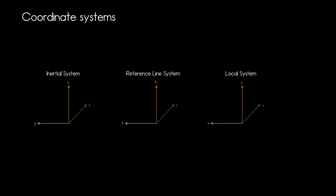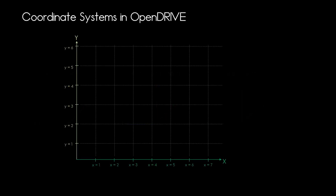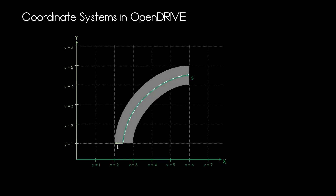While this is still quite abstract, let's see how it is all interconnected. The inertial system is the basis and everything is defined within this system. The start point of each reference line element is defined in the inertial system and has xy coordinates for the starting point — in this example x equals 2.5 and y equals 1. Many features are attached to the reference line, like an object representing the pole a sign sits on. That object is defined in its own Cartesian coordinate system — the local system — and is inserted with an insertion point in the reference line system at a specific s and t coordinate.